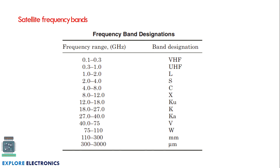What frequency bands do satellites use for communication? The frequency ranges from 0.1 GHz to 3000 GHz. From 0.1 to 0.3 GHz is called Very High Frequency, 0.3 to 1.0 GHz is Ultra High Frequency, and then we have the L, S, C, X, K, Ku, Ka, V, W, and O bands. These are the different band designations and frequency ranges used in satellite communication, all in GHz.